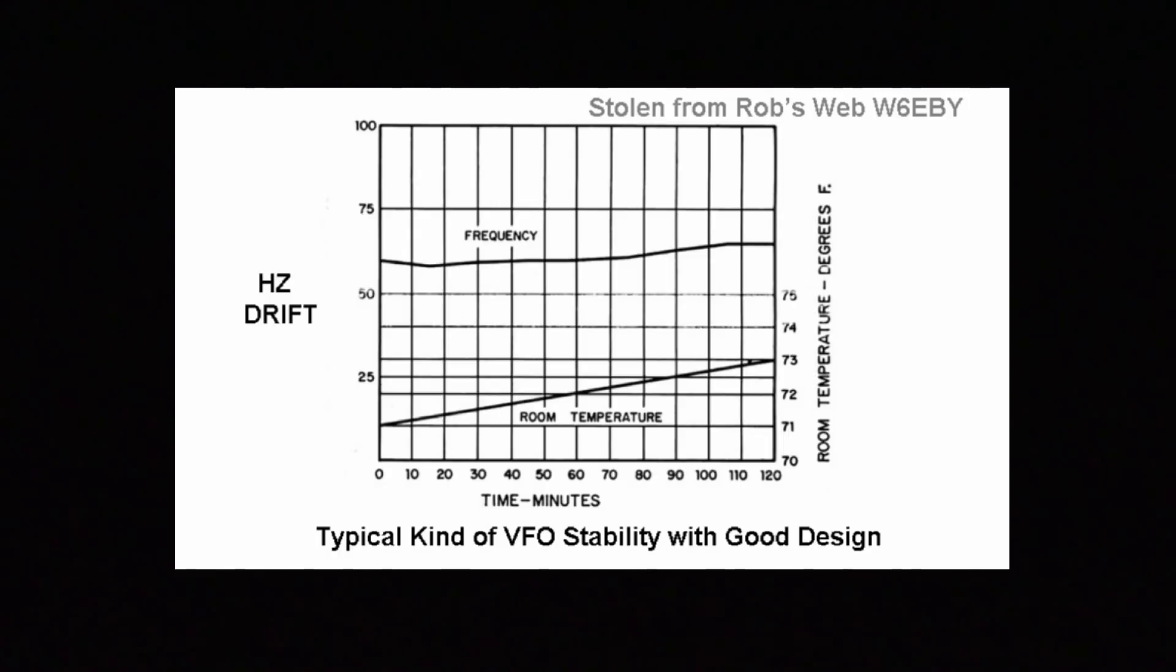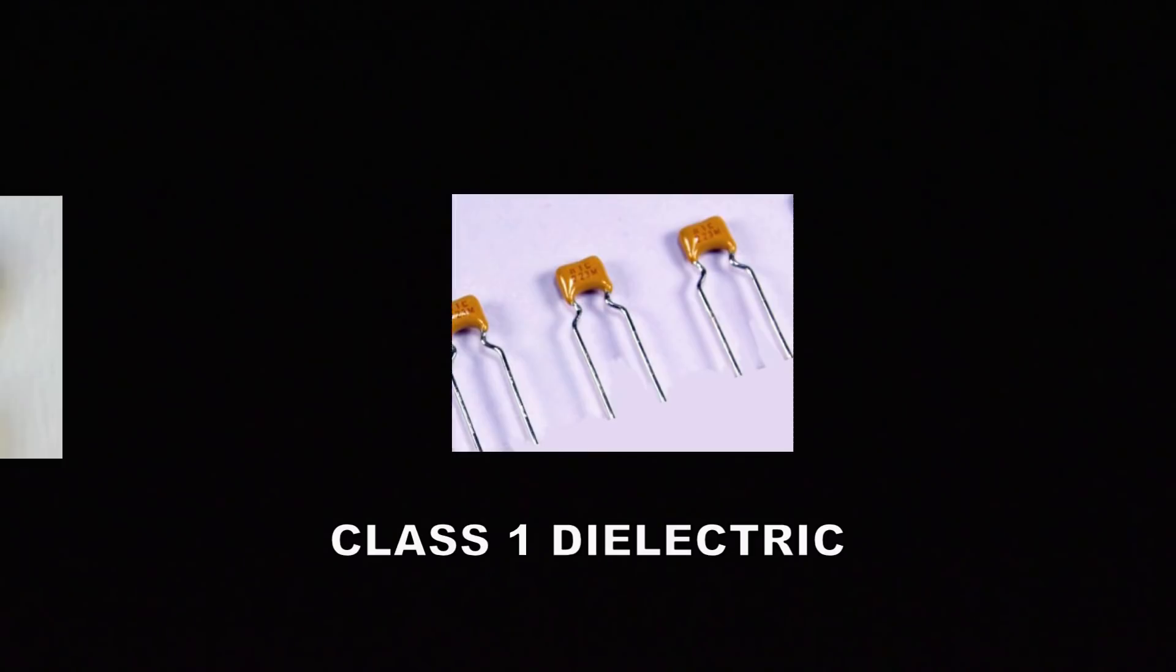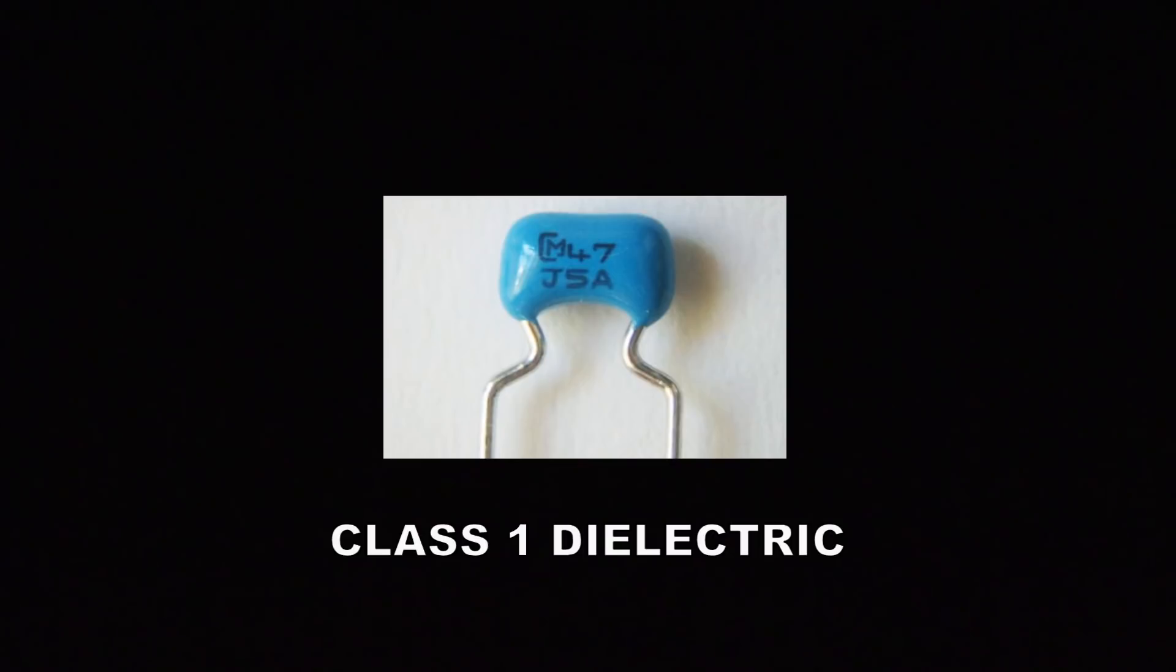In short term, the frequency seems to go down a little bit. In long term it recovers and goes a little bit above the starting frequency. The entire excursion seemed to be less than 100 hertz over the 12 hours I operated it. Basically, the basement temperature varied about 10 degrees Fahrenheit or a little over 6 degrees Celsius.